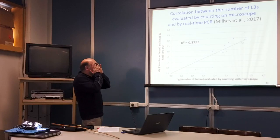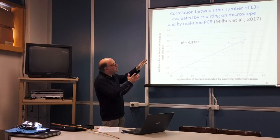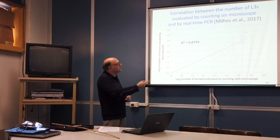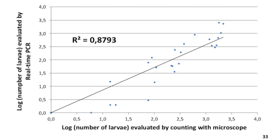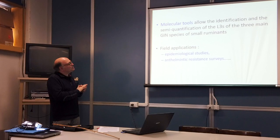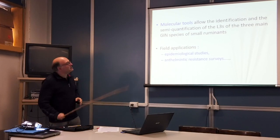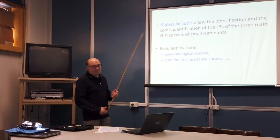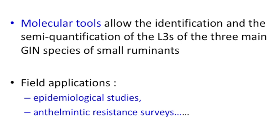In this work we evaluated the correlation between the number of infective larvae evaluated by counting on the microscope and by real-time PCR. The correlation is very high, meaning that the evaluation of the number of larvae by microscope and by real-time PCR is quite similar — there is no big difference. These molecular tools permit the identification and semi-quantification of infective larvae of the three main gastrointestinal nematode species of small ruminants, and could be applied for field studies such as epidemiological studies on anthelmintic resistance surveys.